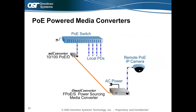PoE-powered media converters save money by eliminating additional electrical outlets in your network closet. If your existing PoE switch has no fiber ports or has used them all, just deliver PoE power and data into the copper port of a PoE-powered myConverter. It sends data over long-distance fiber to an OmniConverter PoE media converter, which injects PoE power to devices up to 100 meters away. This keeps the network clean without extra electrical cords and provides redundant power from both AC/DC and the PoE switch.